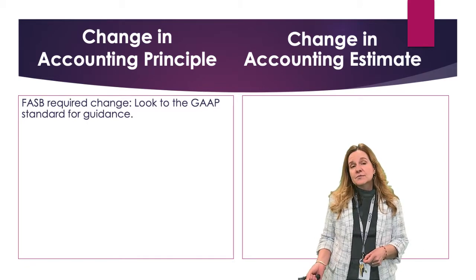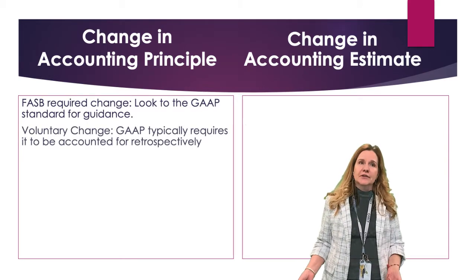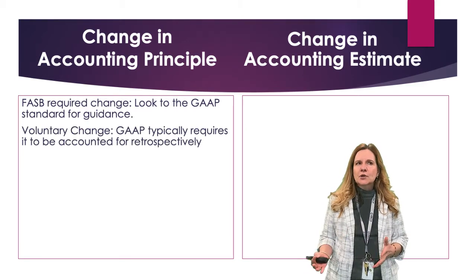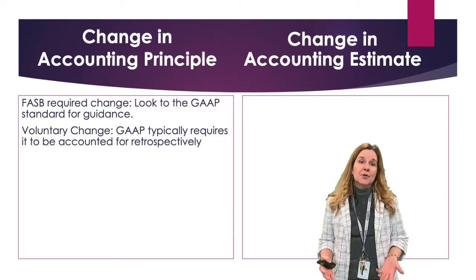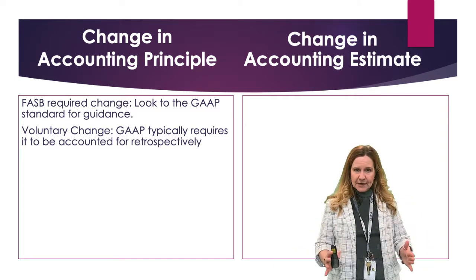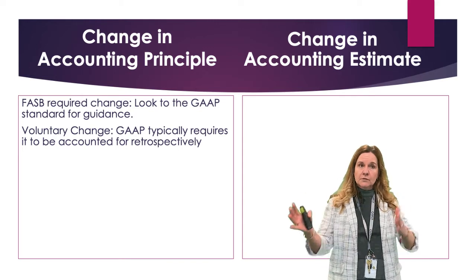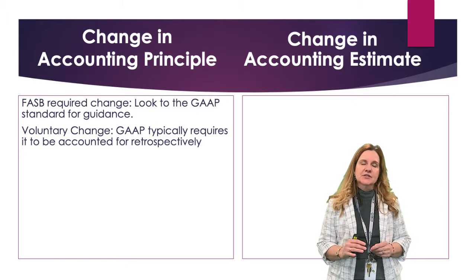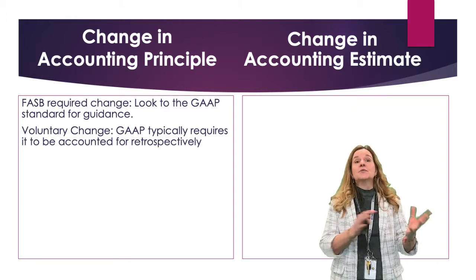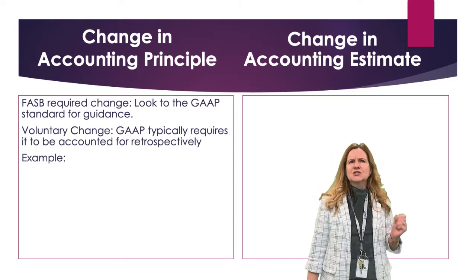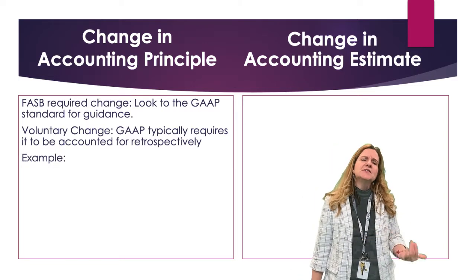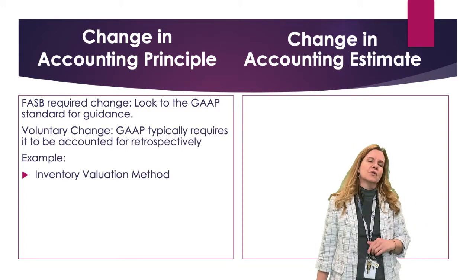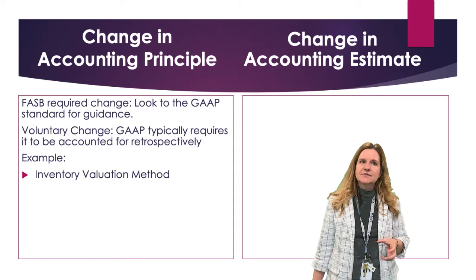Also, corporations or companies from time to time will do a voluntary change. When a voluntary change occurs in accounting principle, GAAP usually requires it to be retrospective. That means I have to go back for whatever years I'm showing in the annual report. Some examples of a change in accounting principle would be changing an inventory valuation method — maybe changing from FIFO to weighted average, or from LIFO to FIFO, or any of those kinds of changes.